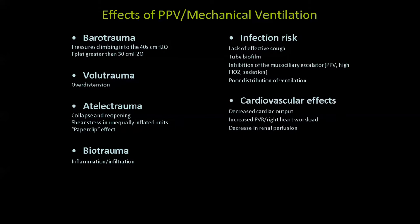Next are cardiovascular effects, which can be minimal or significant depending on lung compliance. In a very stiff lung, pushing gas in doesn't expand it much, so it doesn't compress the surrounding blood vessels as much. But in a compliant lung, the lung expands a lot, pushing on blood vessels, causing capillaries around the alveoli to flatten. Blood doesn't get pulled back into the heart from the vena cava as effectively, decreasing venous return, increasing pulmonary vascular resistance, and resulting in lower cardiac output. This can decrease kidney perfusion and contribute to renal failure.